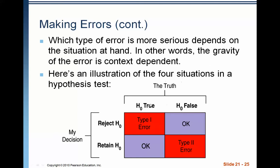Before we look at that, let me show you this illustration of the four possibilities when we run a hypothesis test. The vertical columns represent the truth — this column is that the null hypothesis is true, and this column is that the null hypothesis is false. The rows along the side are what the evidence has led us to do: this row is that we rejected the null hypothesis, and this row is that we retained, or failed to reject, the null hypothesis. The box where we rejected the null hypothesis even though it was true — that's a type 1 error.